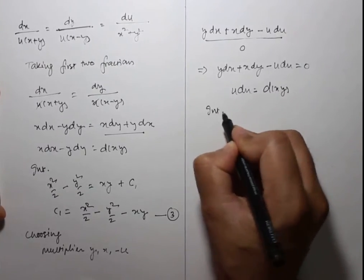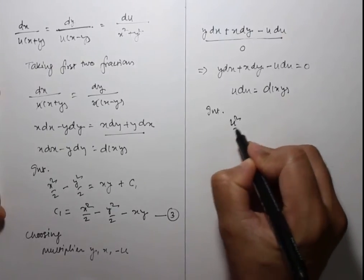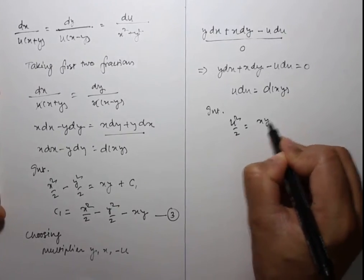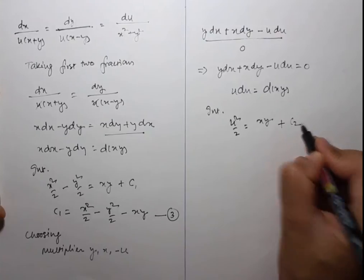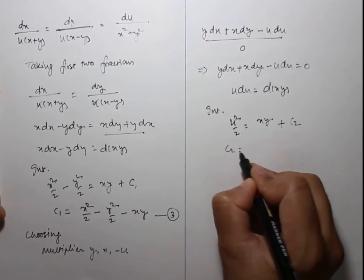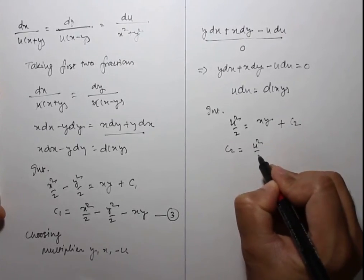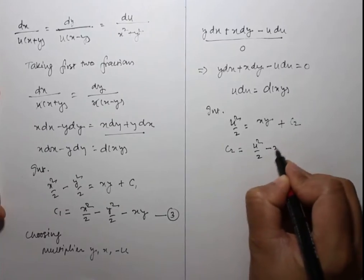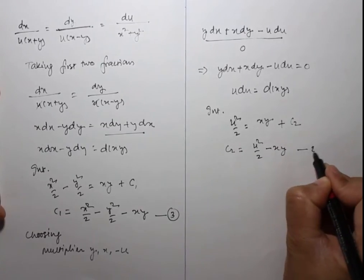Integrating both sides: u²/2 = xy + c₂. Therefore c₂ = u²/2 - xy. This is equation 4.